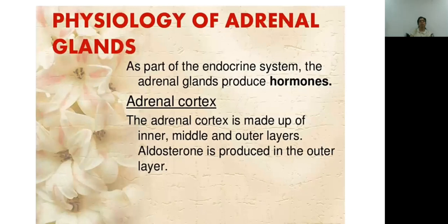The physiology of the adrenal gland: the adrenal gland is an endocrine gland, part of the endocrine system. It produces hormones which are secreted directly into the blood, and then act on target tissues.